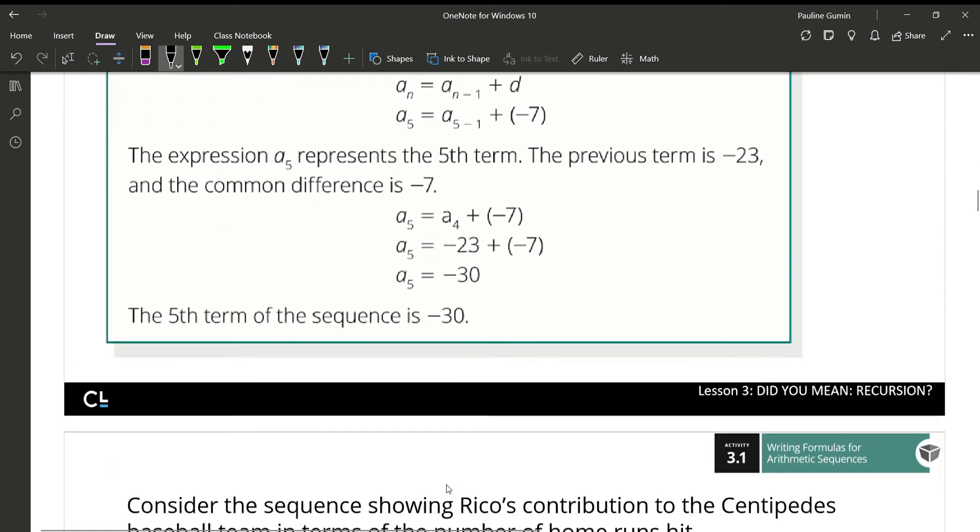215 plus 18, 233. 233 plus 18 is 251. 215 plus 18 is 269. That's my 9th term. And my 10th term plus 18 is 287.